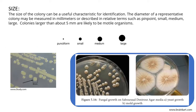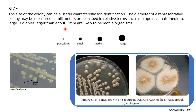The first colony characteristic is size. The size of a colony can be a useful identification characteristic. The diameter of a representative colony may be measured in millimeters, or described in relative terms: pinpoint (punctiform), small, medium, and large. Bacterial colonies generally grow between small and medium, while fungal colonies tend to be medium to large.